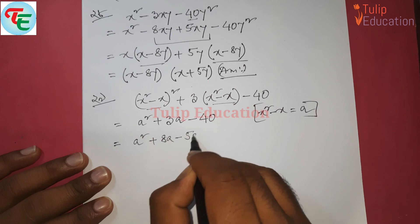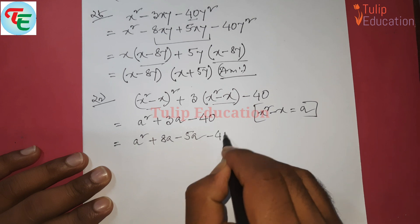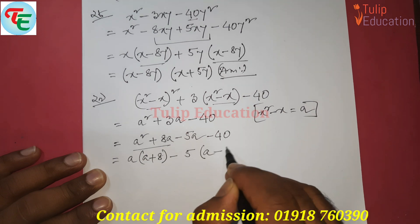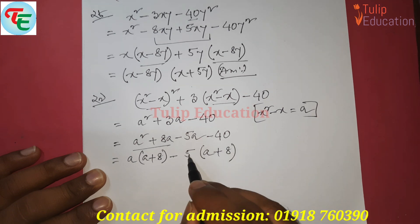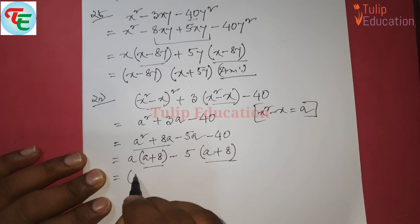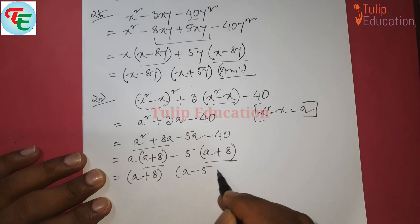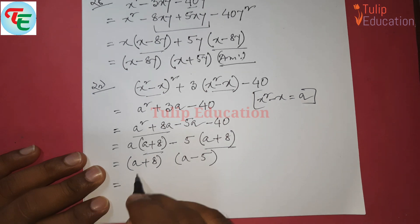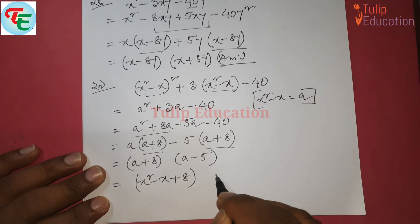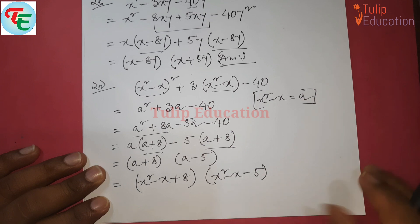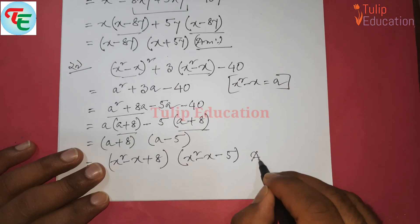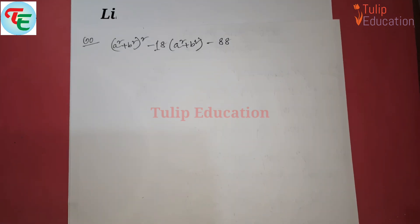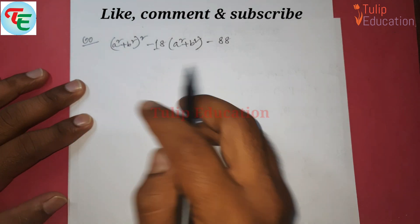So we have 8a minus 5a. Taking 8a as plus, we divide and get at the same time a minus 5. We get the answer: x squared minus x, then x squared minus x minus 5. So the answer to the question is 3. That is the answer.